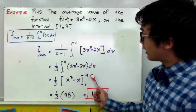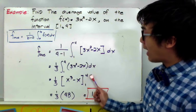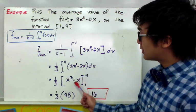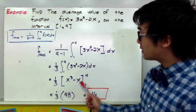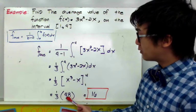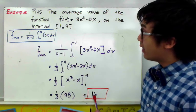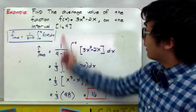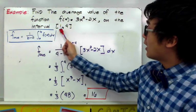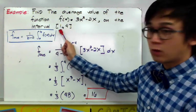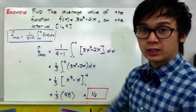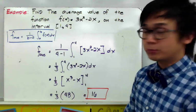By direct substitution, evaluating our upper limit and lower limit, we'll have x cubed minus x from 1 to 4 equal to 48. And 1 third times 48 is equal to 16. Therefore, the average value of the function 3x squared minus 2x on the interval 1 to 4 is equal to 16 using this formula. That is our first example.